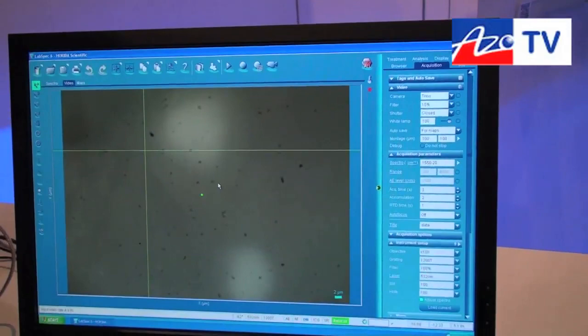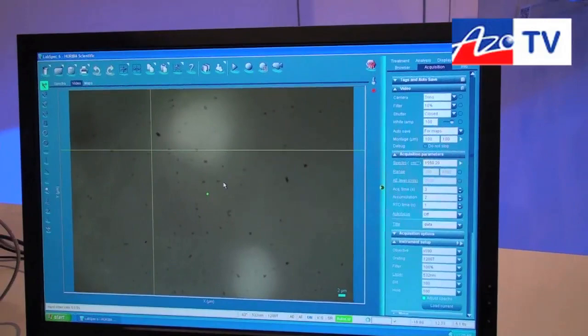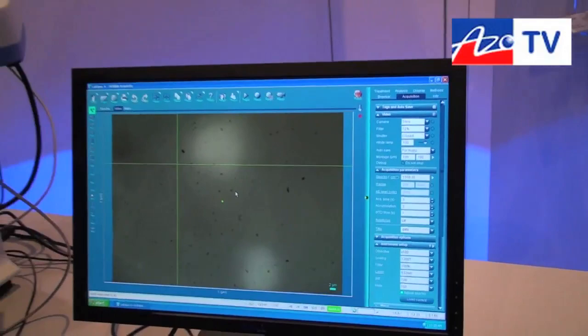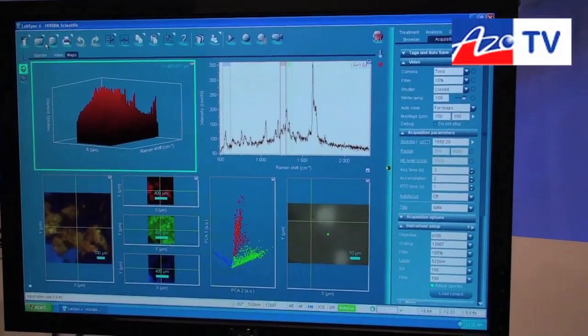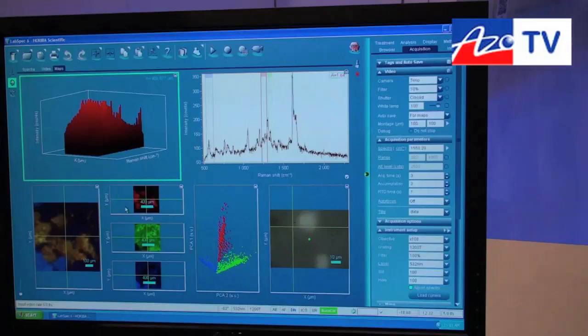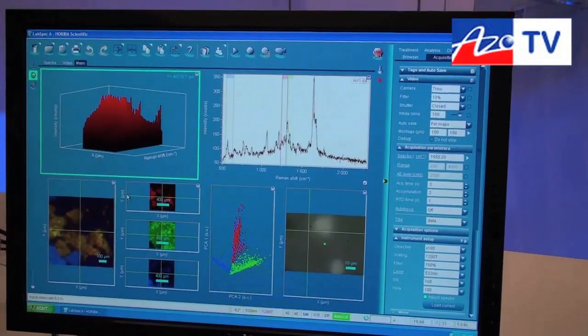We are measuring in depth and we are seeing what's actually inside the sample and not only on the surface. You can do this automatically, moving the stage automatically and produce 3D information like what we can see here and exploit this 3D multi-spectra to make a very nice picture illustrating the distribution within the sample whether it is at the surface or in depth.